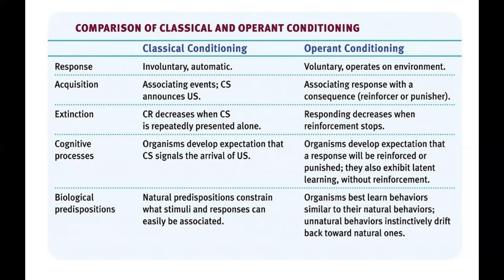Biological predisposition: natural predispositions constrain what stimuli and responses can easily be associated. In operant conditioning, organisms best learn behaviors similar to their natural behaviors, and unnatural behaviors distinctly drift back towards natural ones. Both classical and operant conditioning cannot override biological predisposition or instinctual drift.